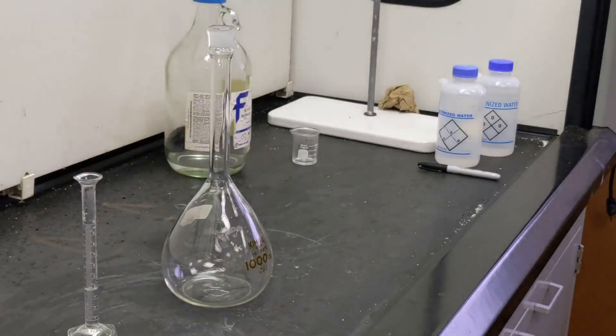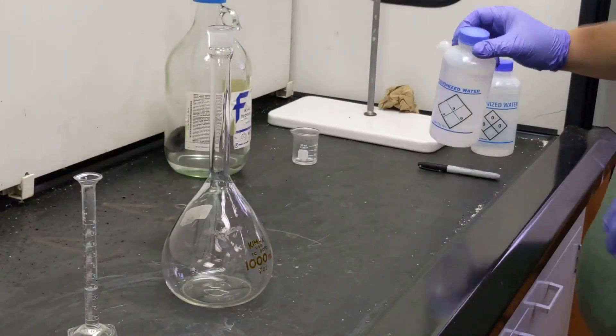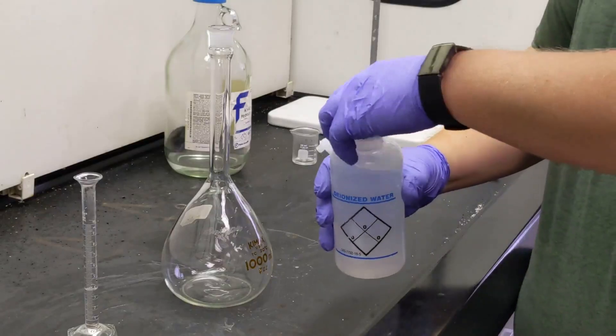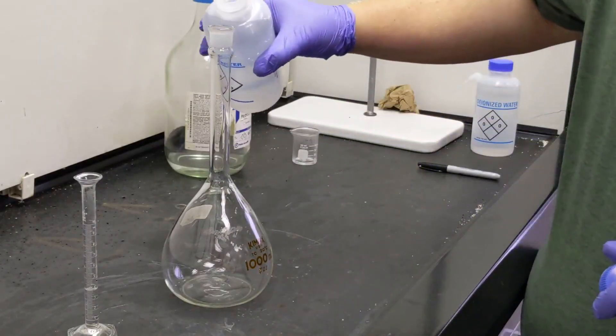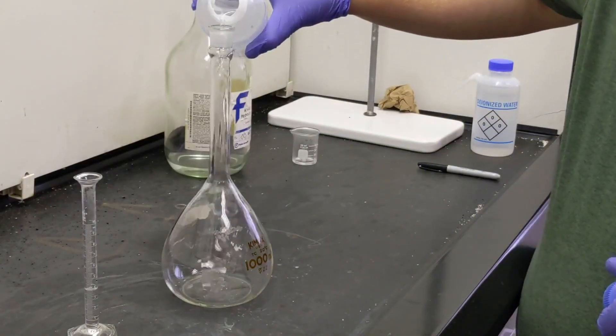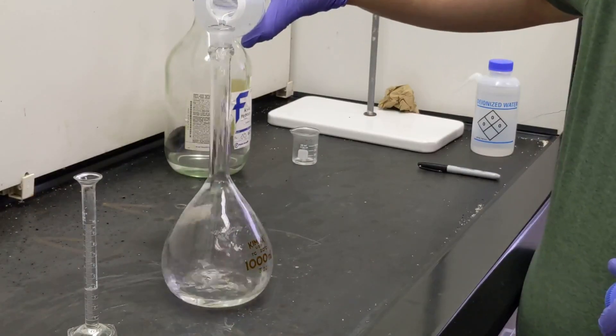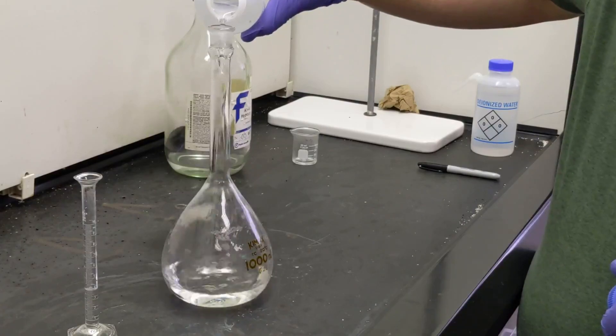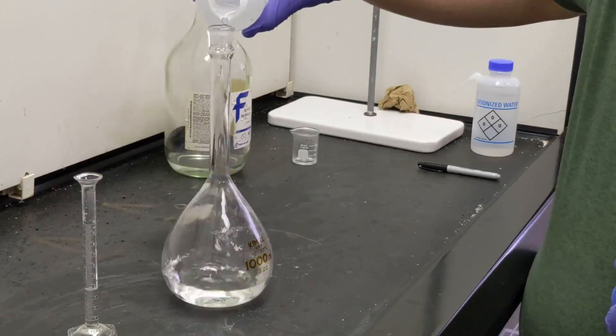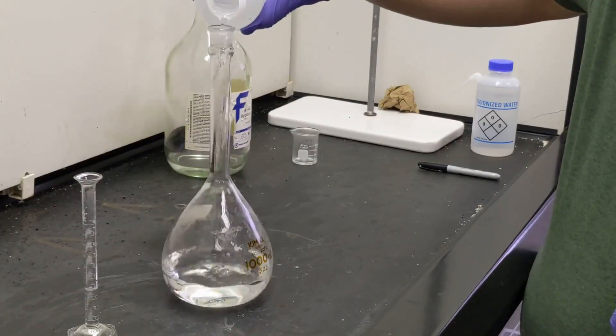Now that we have our acid in the graduated cylinder, we need to dilute it, but first we'll add water to our volumetric flask. It's important to add the water first because mixing concentrated acid with water generates significant heat that could cause the acid to splatter if done in the wrong order.